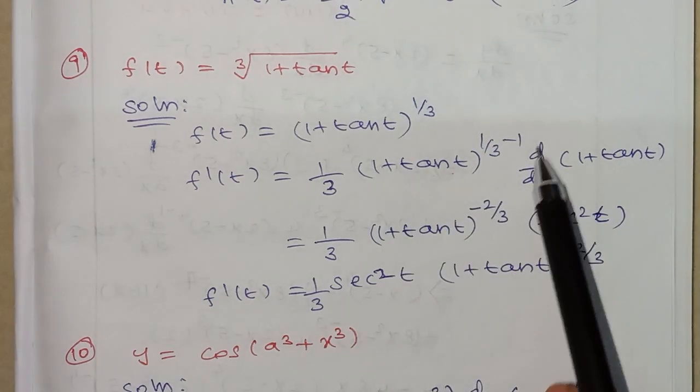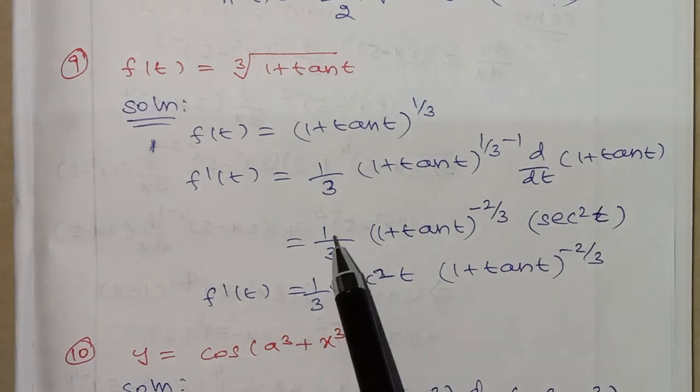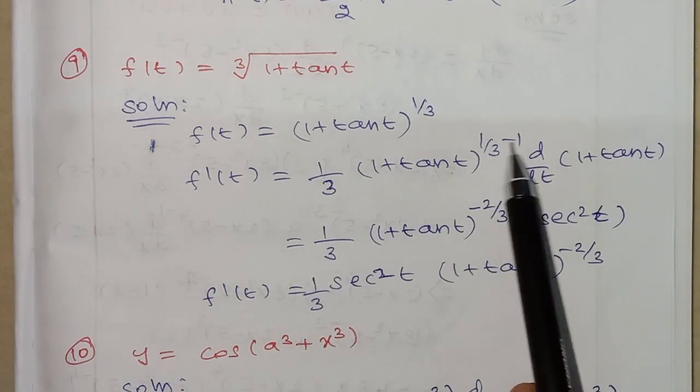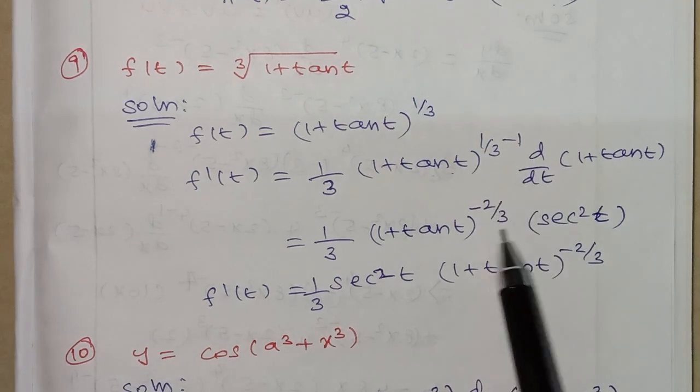Next, d by dt of 1 plus tan t. 1 by 3 into 1 plus tan t to the power... 1 minus 3 is minus 2 by 3.